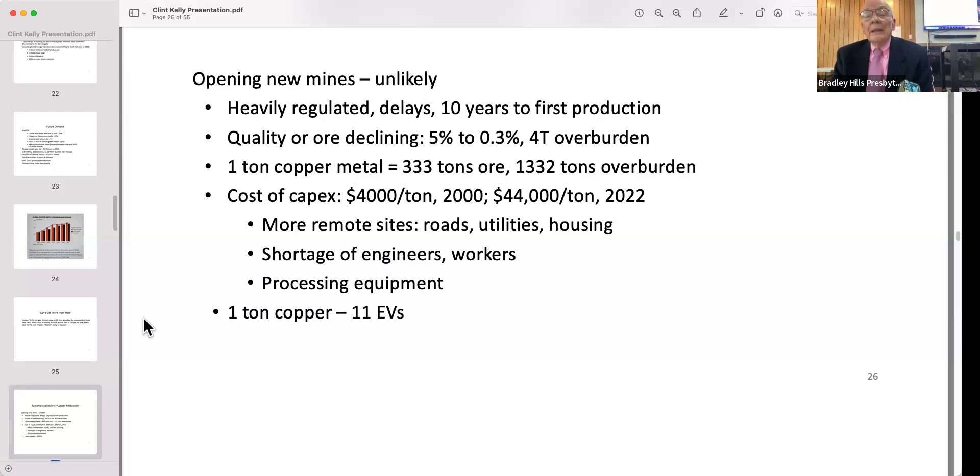Since the low-hanging fruit is mostly gone, in addition to taking out 333 tons of ore to get a ton of copper, you have to take out 1,332 tons of overburden. Capex has gone from $4,000 a ton in 2000 to $44,000 a ton now. A mine has got to be a pretty good bet before you're going to try and develop it. Sites are remote, oftentimes no roads, no utilities, no housing, so you've got to put all that in. There's also a shortage of engineers and workers. One ton of copper does about 11 EVs.